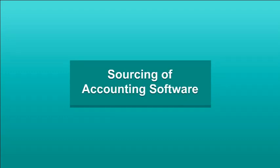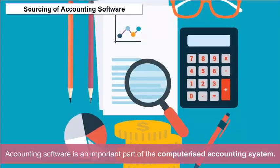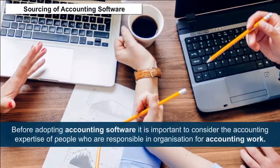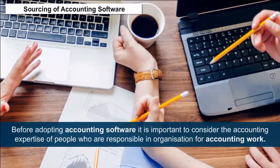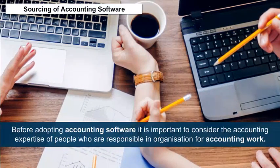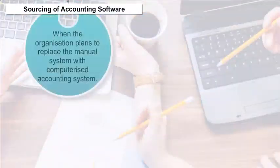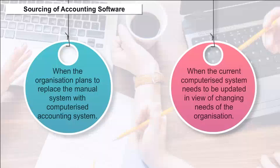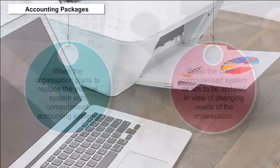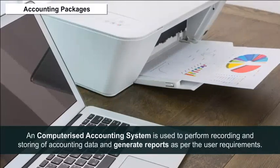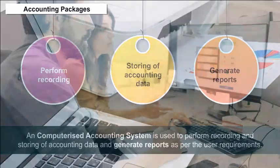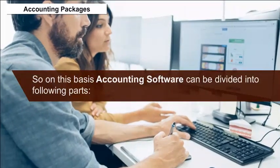Sourcing of accounting software. Accounting software is an important part of the computerized accounting system. Before adopting accounting software, it is important to consider the accounting expertise of the people responsible for accounting work in the organization. The need for accounting software arises in two situations: when the organization plans to replace the manual system with a computerized accounting system, or when the current computerized system needs to be updated due to changing organizational needs. Accounting software can be divided into categories based on user requirements.